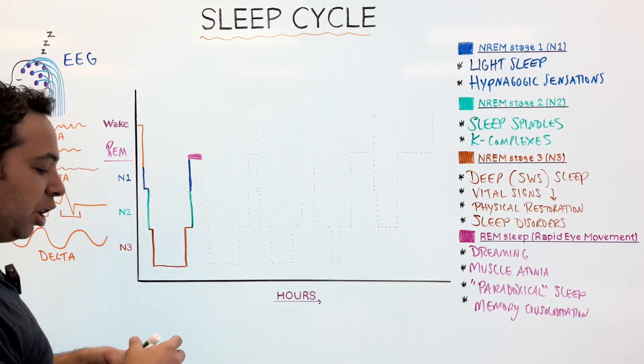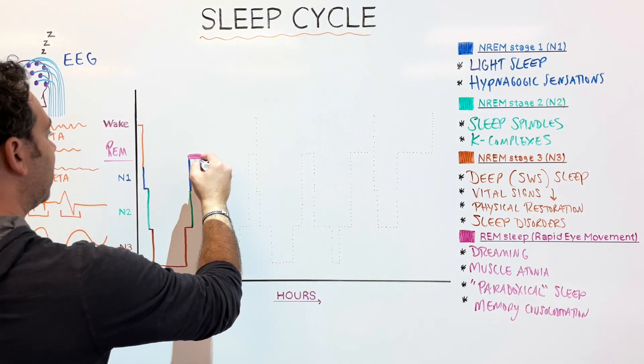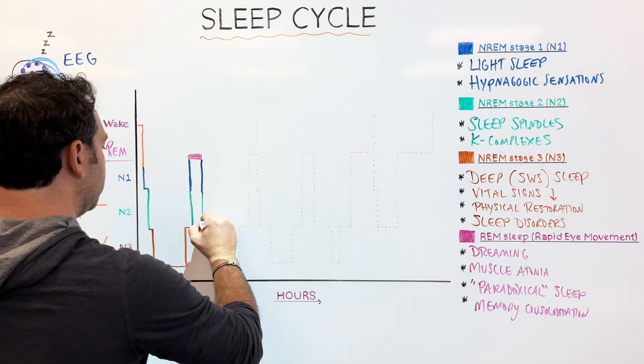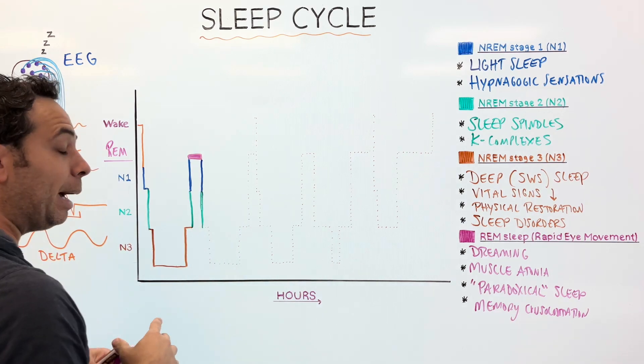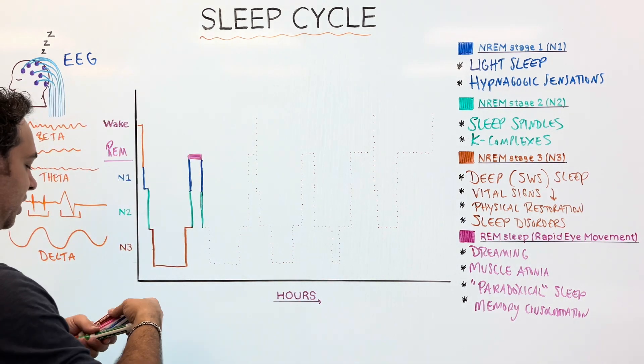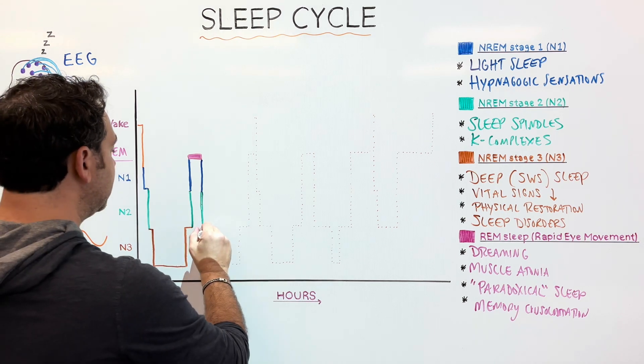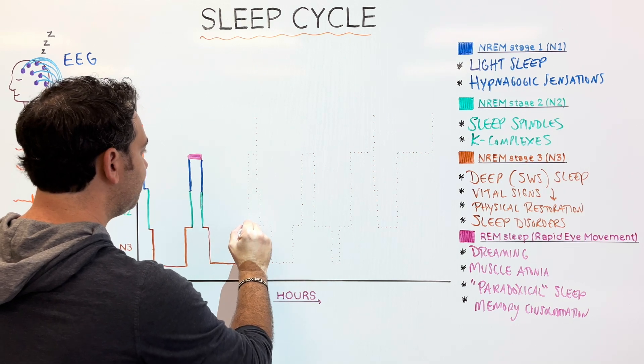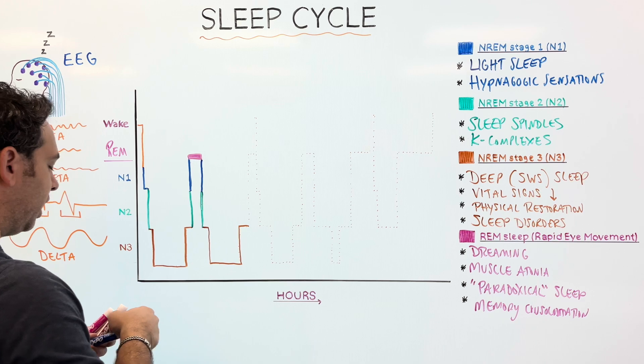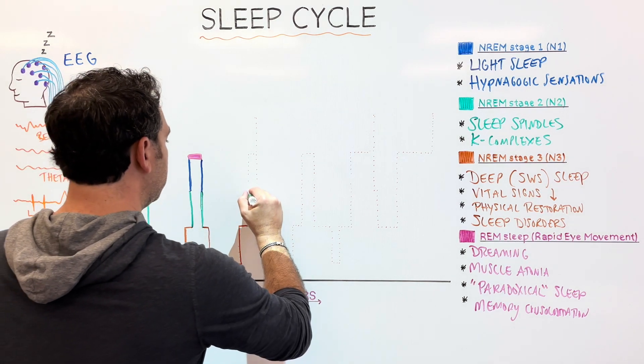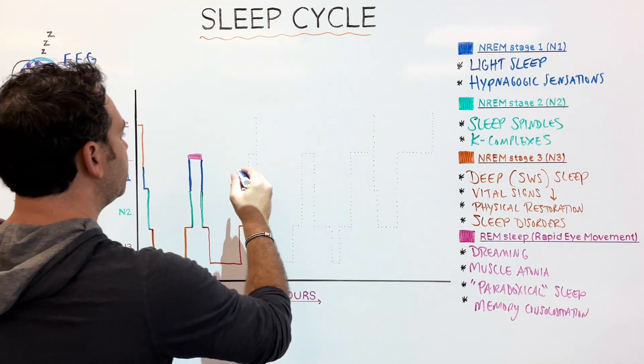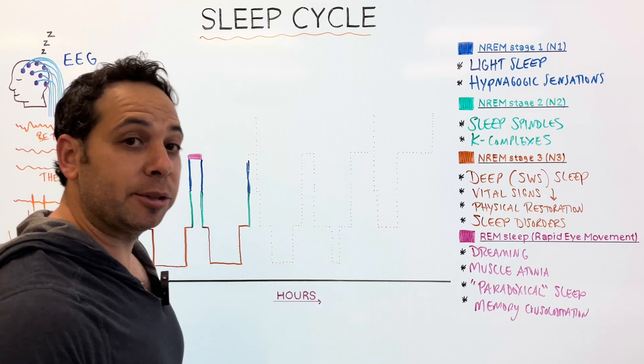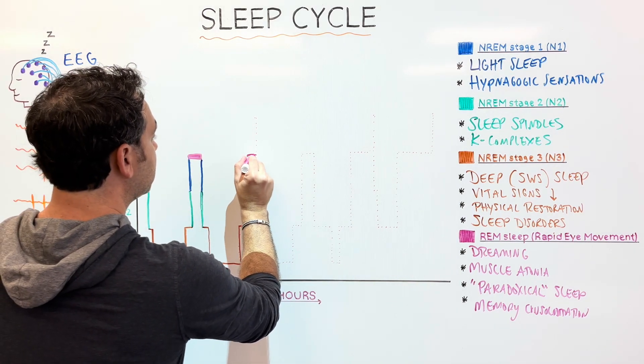All right, so what happens after this? We are going to repeat the cycle again. We go back to non-REM one. We go back to non-REM two. We have sleep spindles and K-complexes. And then we go to what we call deep sleep, slow-wave sleep. And what happens? We go back up. Remember, this cycle is going to continue throughout the night. And one thing I do want to show you as we kind of head up here to REM sleep is that REM's going to occur again. It occurs about three to four times in the night.